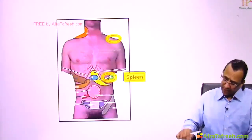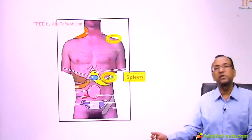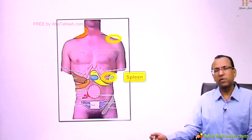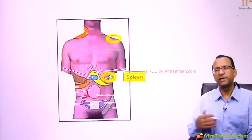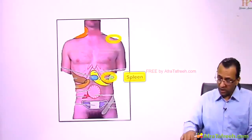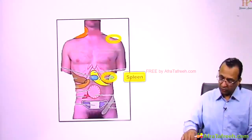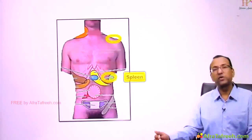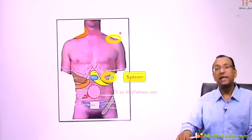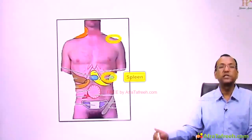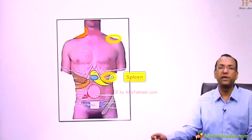Similarly, if there is a spleen rupture due to blunt abdominal trauma, the bleeding irritates the central portion of the diaphragm and peritoneum, so the phrenic nerve carries the pain and refers it to the left shoulder tip. This will also be discussed in the abdomen region.